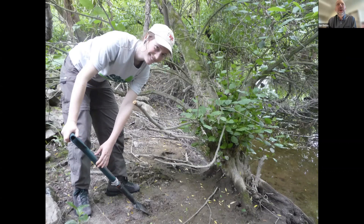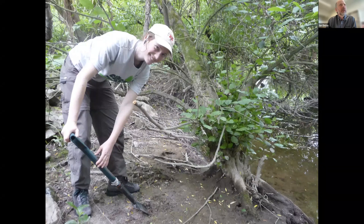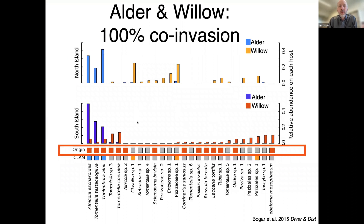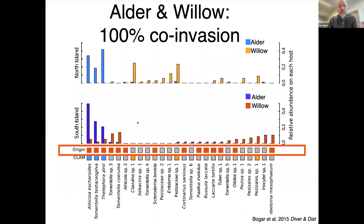Pines are not the only invasive ectomycorrhizal plants — I'll highlight a couple of others. This was a study we did with Laura Bogart, who went on to Stanford. She came down and sampled alder and willow, both ectomycorrhizal and both invading together along some rivers. When we looked at the fungal community, alder had a fairly specific community of fungi, while willow had more species. But when we classified those by origin, they were all classified as either invasive or probably invasive. I'm pretty confident in saying that 100% of the fungi associating with these two invasive species are also not native — just like we're seeing in the pines.